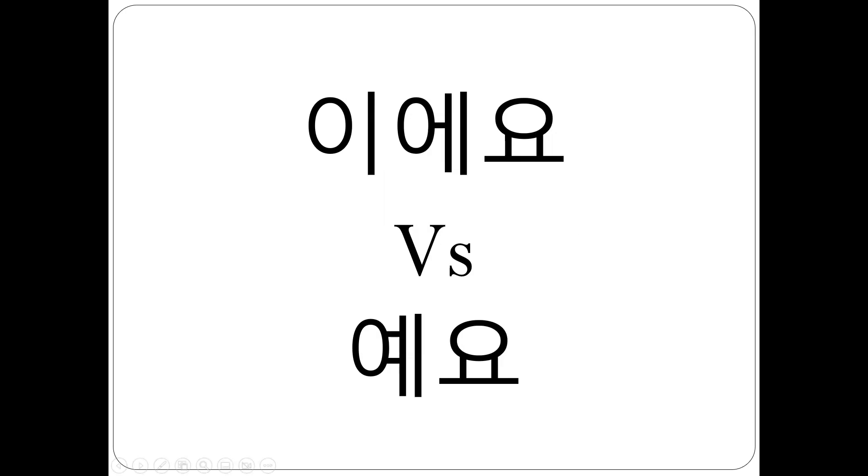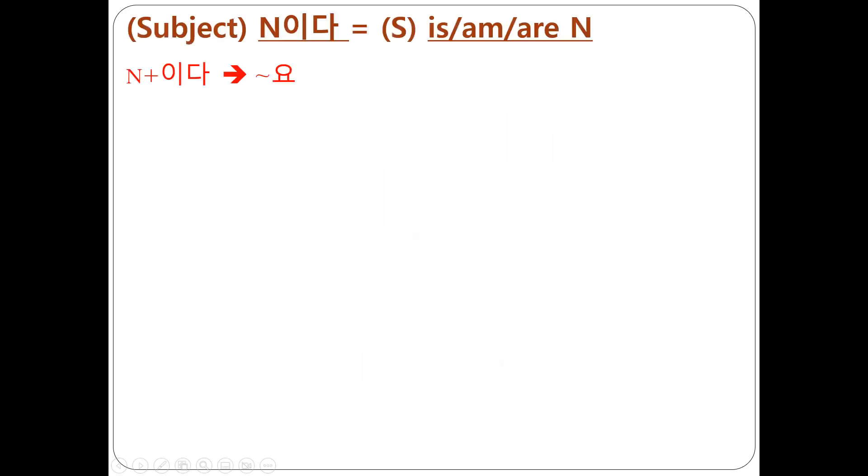이다 is yo form. Actually, 이다 is yo form. Do you know, many students, at this moment, you must have practiced some sentences. It says, something is something. Subject is something. Subject is noun.